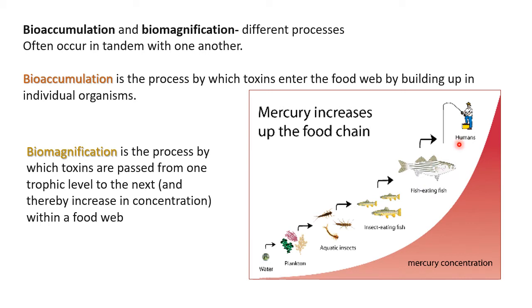Every trophic level in the food web is getting affected. Humans keep consuming fish throughout their lives, so the number of times you eat fish, the mercury concentration increases. It is actually very low in the water, but as fish feeds on insect-eating fish which feeds on aquatic insects which feed on planktons, the concentration keeps on increasing.